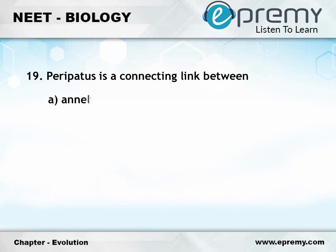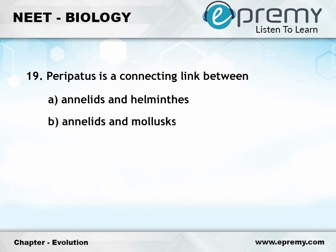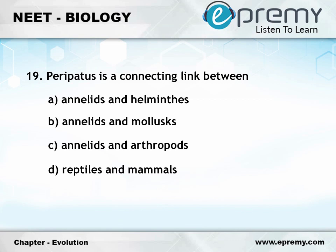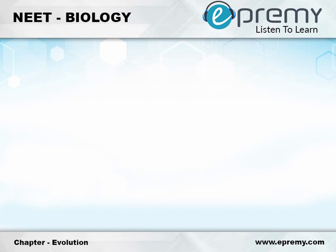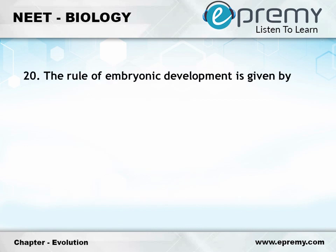Question number 19: Peripatus is a connecting link between. Option A: Annelids and helminths. Option B: Annelids and molluscs. Option C: Annelids and arthropods. Option D: Reptiles and mammals. And the answer is Option C: Annelids and arthropods.